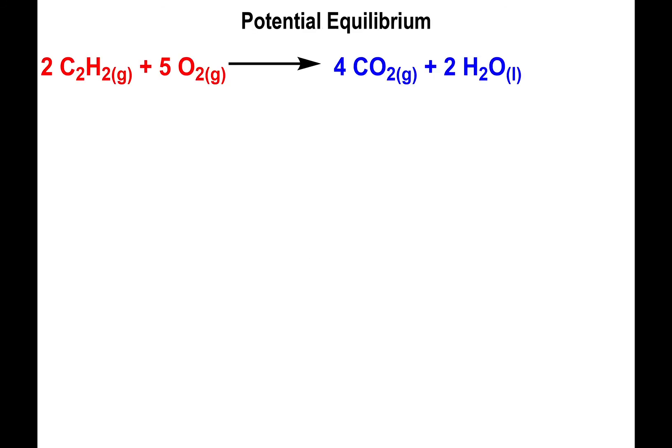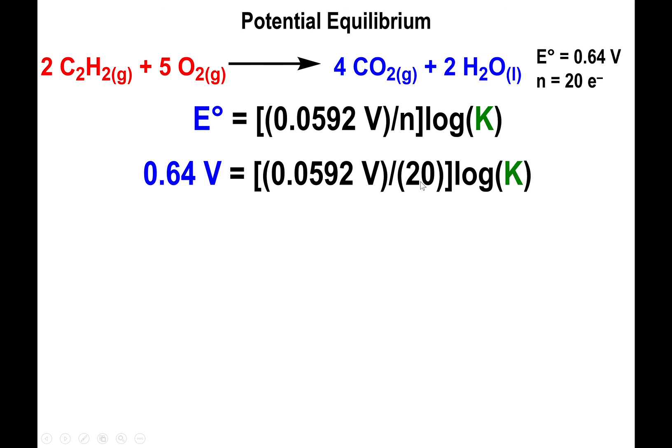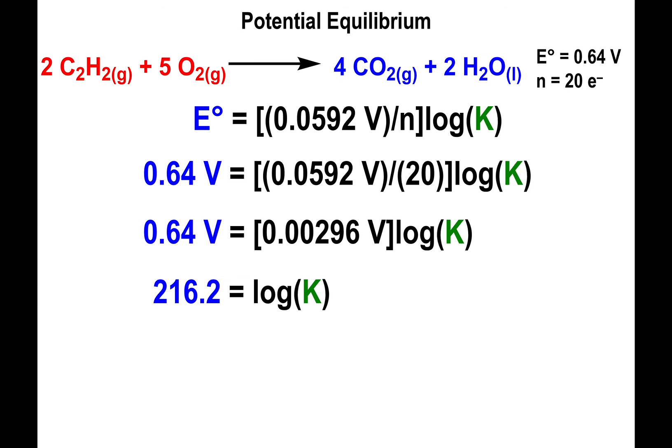To give you one example, looking back at the combustion of acetylene. We now know that the potential is 0.64 volts, and that takes up 20 electrons in this specific balance reaction. So we're going to calculate the value of the equilibrium constant. In order to do that, we have to plug in the value of 20 for n. We divide it from 0.0592. And then we divide both sides by 0.00296. And finally, we raise 10 to 216.2.